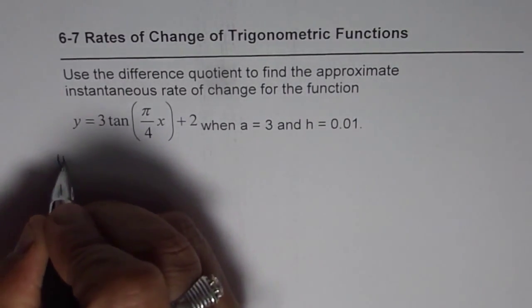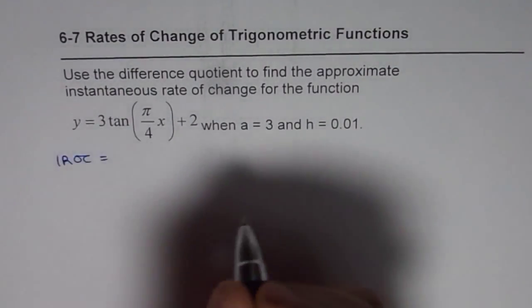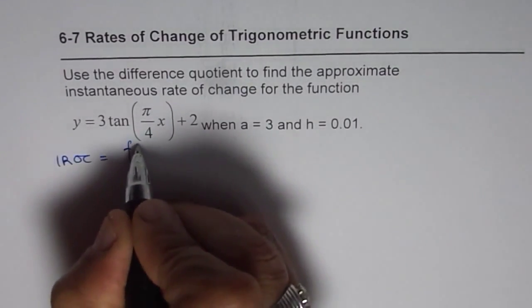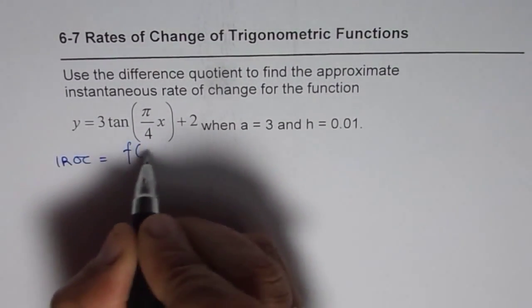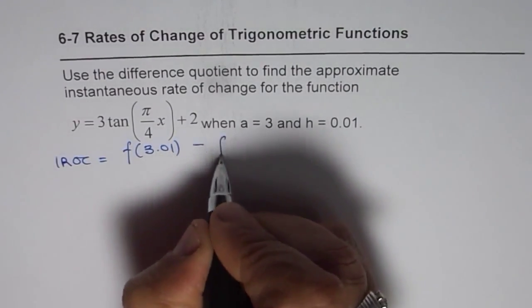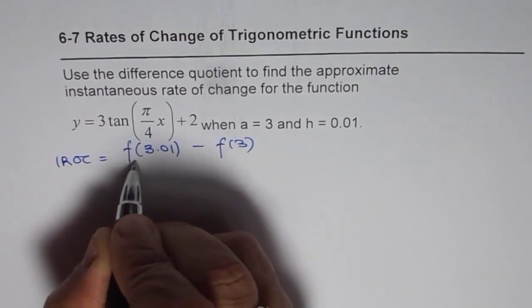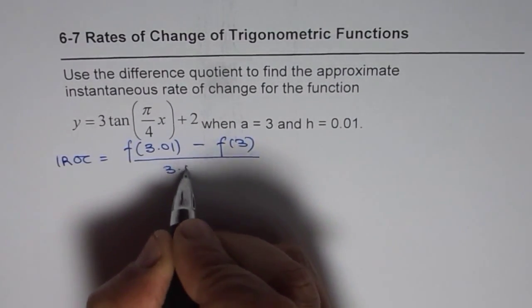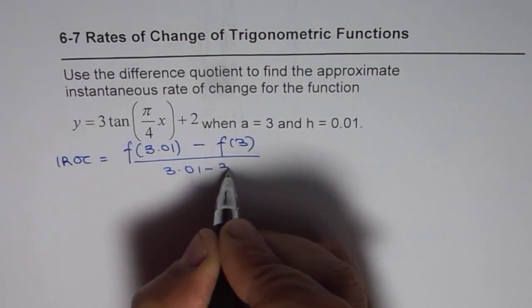The instantaneous rate of change will be given to us by the function f of a is 3, so 3.01 since h is 0.01 minus f of 3 divided by 3.01 minus 3.